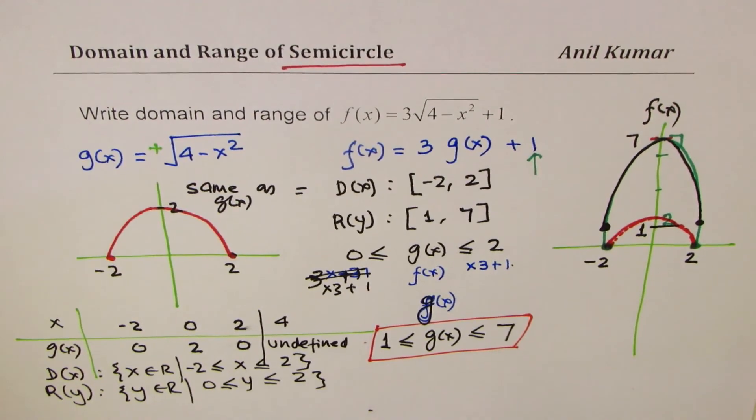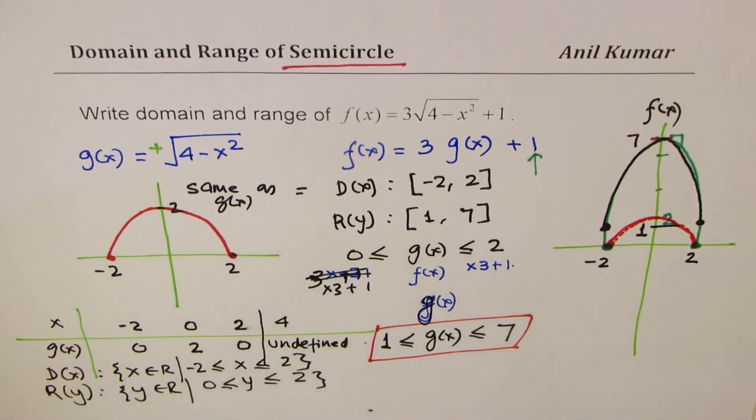So I hope now the concept is clear. So the whole idea of showing you this way is so that you could connect between domain range, you could connect between the equation and semicircle. I hope that makes sense.